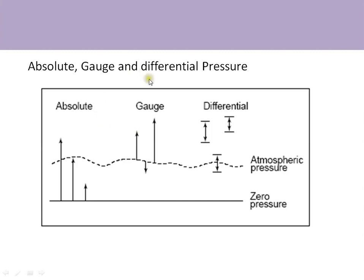This is the classification of pressure: absolute pressure, gauge pressure, and differential pressure. Absolute pressure is always specified with respect to zero, and vacuum is generally specified in absolute pressure. For example, if you specify a vacuum value as 10⁻² millibar, it is always with respect to zero. Gauge pressure is specified with respect to the atmosphere — for example, 10 psi(g) means 10 psi above the atmosphere.